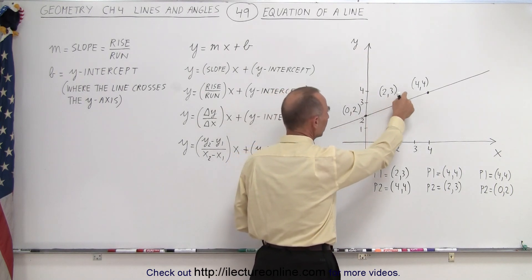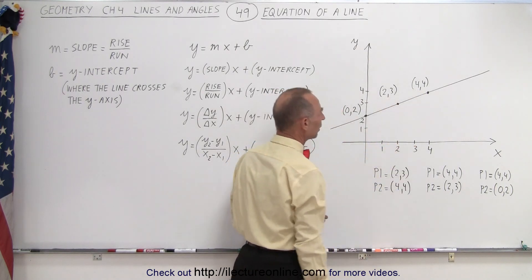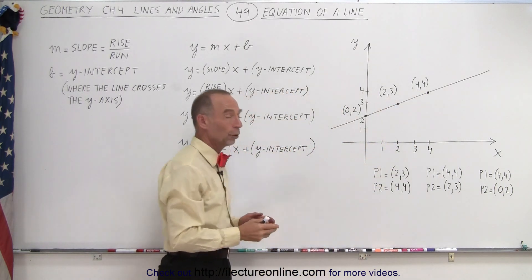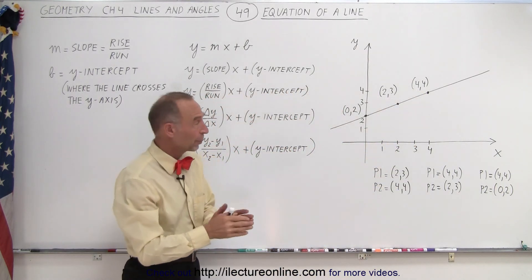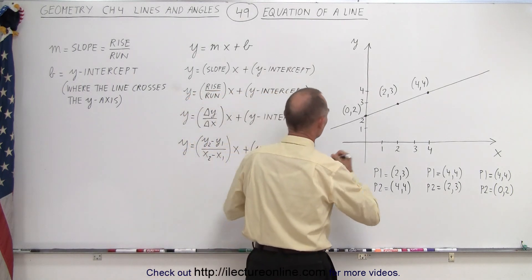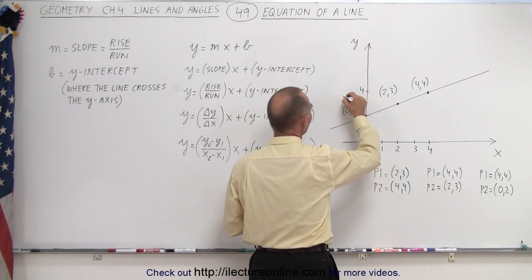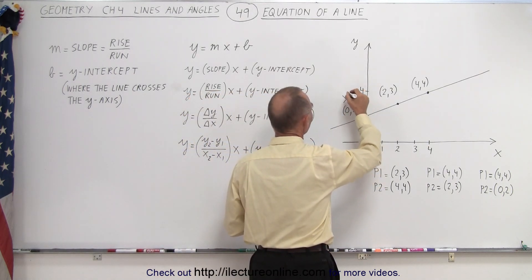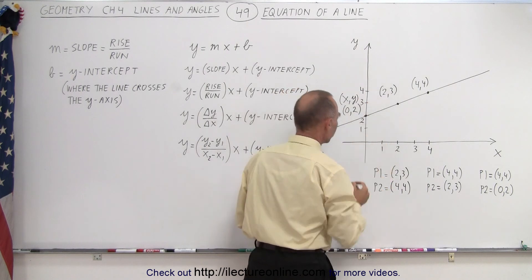The coordinates are (0,2), (2,3), (4,4), and so forth. Notice the first number is the x value of that coordinate and the second number is the y value of that coordinate.